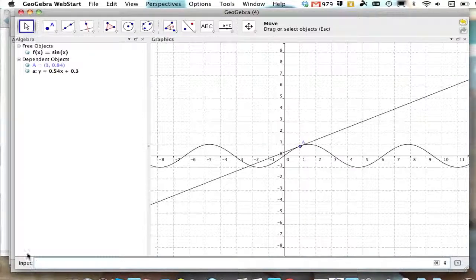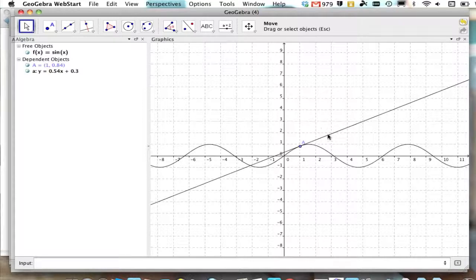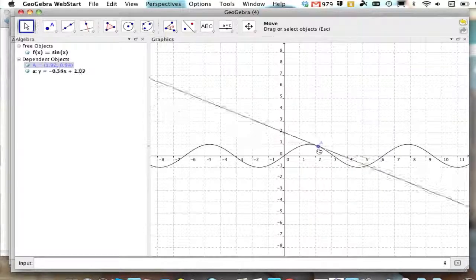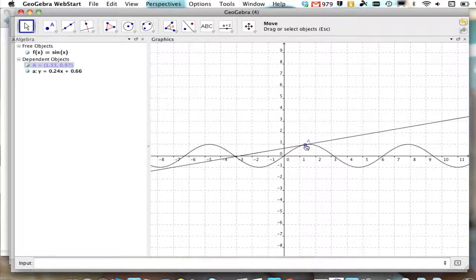And on our graph, you'll see that it is indeed a tangent line. Even if I move point A around, the tangent line will change.